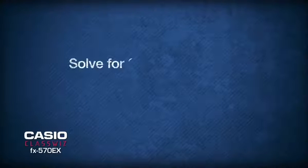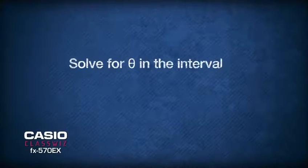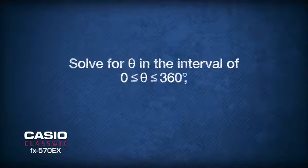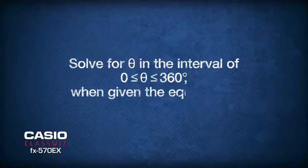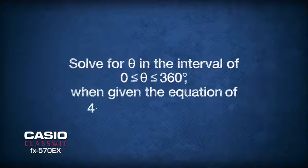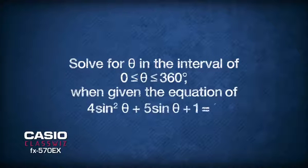We are required to solve for theta in the interval of 0 to 360 degrees when given the equation of 4sin²θ plus 5sinθ plus 1 equals 0.